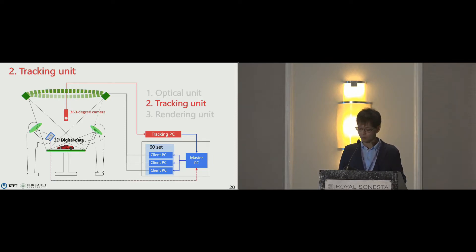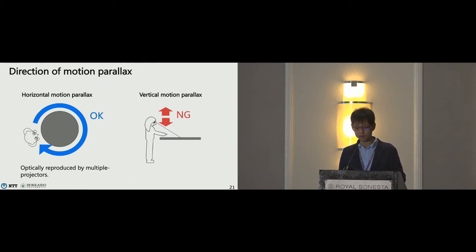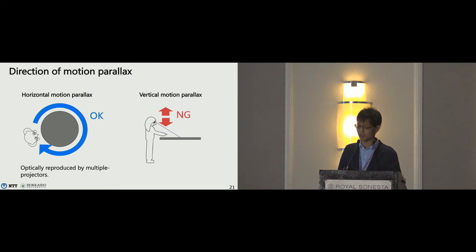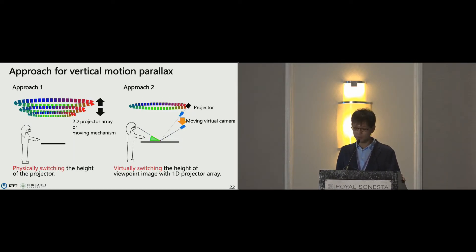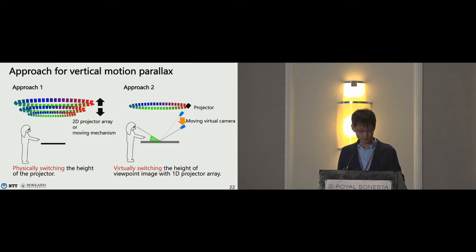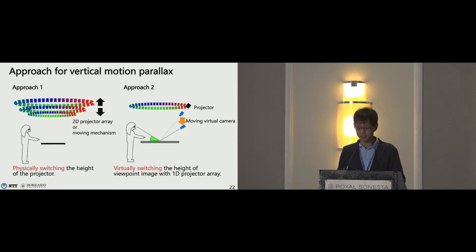Next I introduce the tracking unit for vertical motion parallax. The tracking unit consists of a 360-degree camera and a tracking PC. Motion parallax has two directions. In our system, horizontal motion parallax is reproduced by the multiple projector array using linear blending. The tracking unit is used for reproducing vertical motion parallax. There are two approaches: one is physically switching the height of the projector using a 2D projector array or a moving projector; the other is virtually switching the height of the viewpoint image. Physically switching needs a huge number of projectors or a complicated moving mechanism, so we focused on the virtual switching approach.